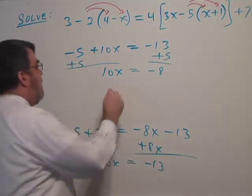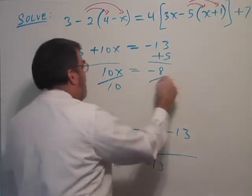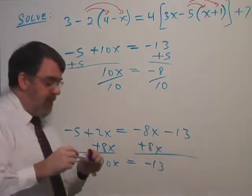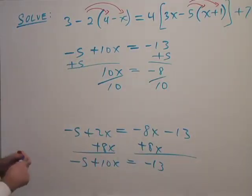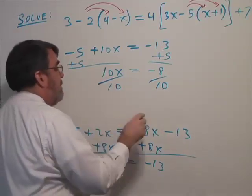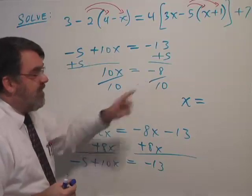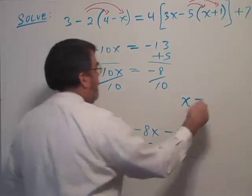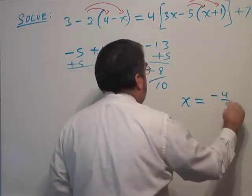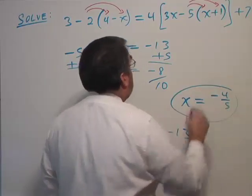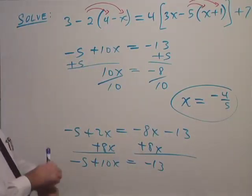And then let's finish by dividing by 10. So what's my answer? This is going to cancel, leave me x. So x is going to equal - and negative 8 tenths will simplify to negative 4 fifths. So there we go. There's our answer.